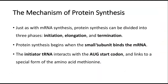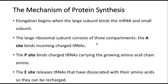Just as with mRNA synthesis, protein synthesis can be divided into three phases: initiation, elongation, and termination. Protein synthesis begins when the small subunit binds the mRNA. Then the initiator tRNA interacts with the AUG start codon and links to a special form of the amino acid methionine. Elongation begins when the large subunit binds the mRNA and small subunit. The large ribosomal subunit consists of three compartments: the A site, which binds incoming charged tRNAs; the P site, which binds charged tRNAs carrying the growing amino acid chain; and the E site, which releases tRNAs that have been disassociated from their amino acids so they can be recharged.